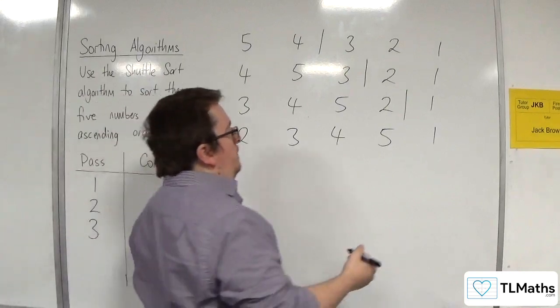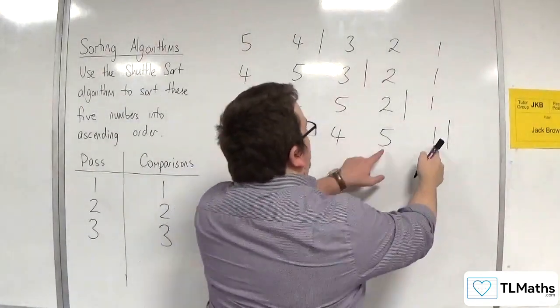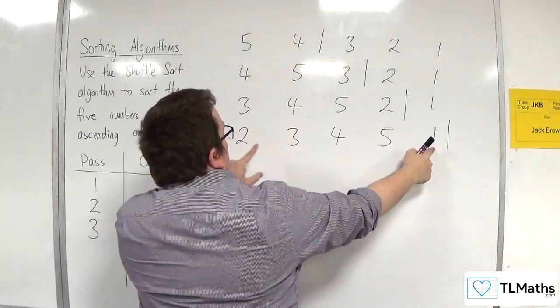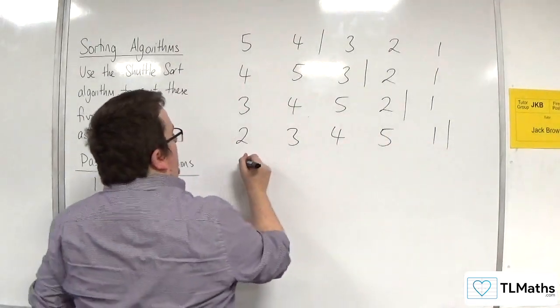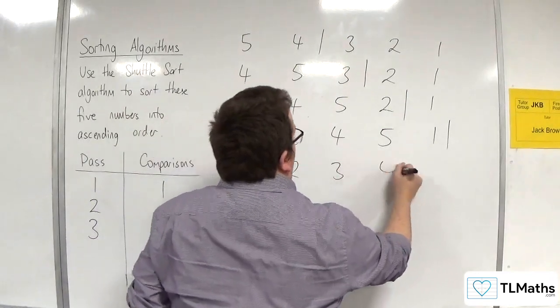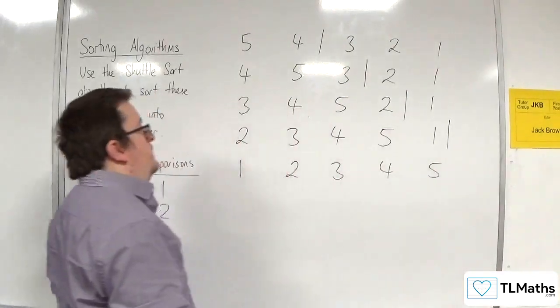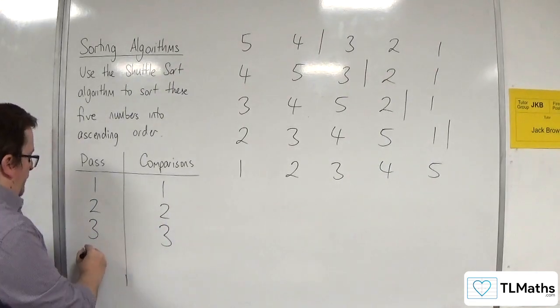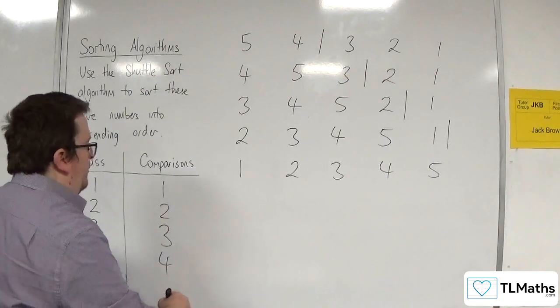Then, we bring in 1. 1 gets compared with 5, and we swap. Then, with 4, and we swap. Then, with 3, and we swap. Then, with 2, and we swap. And so, we'd end up with 1, 2, 3, 4, 5. So, 1 got compared with each of them, so there were 4 comparisons on the fourth pass.